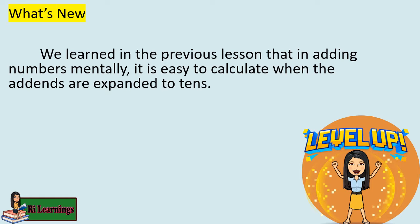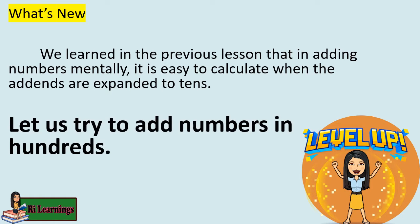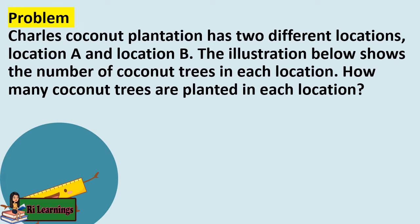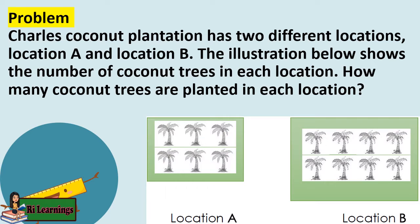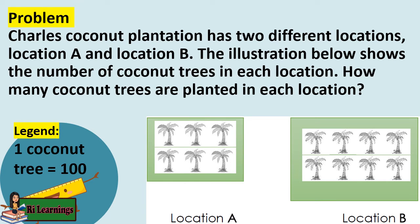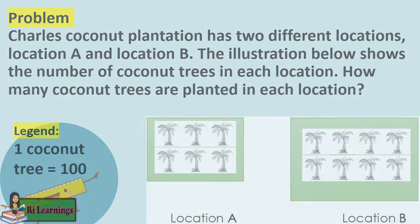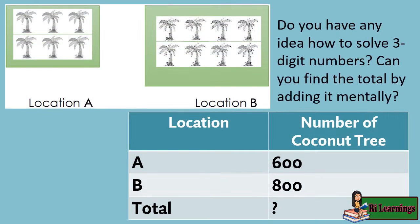We learned in the previous lesson that in adding numbers mentally, it is easy to calculate when the addends are expanded to tens. Let us try to add numbers in hundreds. Charles Coconut Plantation has two different locations, A and B. The illustration shows the number of coconut trees in each location. Location A has 6 coconut trees, Location B has 8 coconut trees. The legend shows 1 coconut tree equals 100. Do you have any idea how to solve three-digit numbers? Can you find the total by adding mentally?